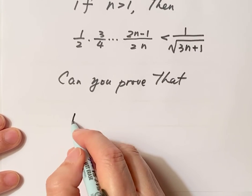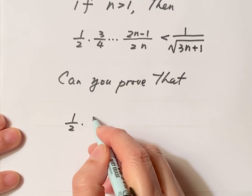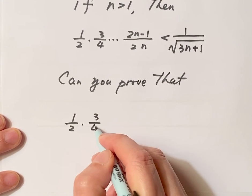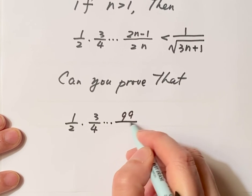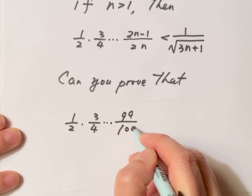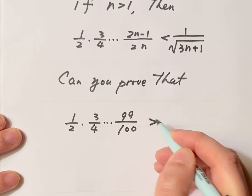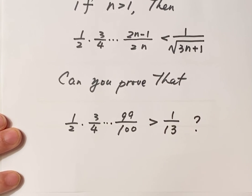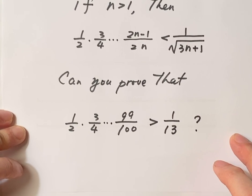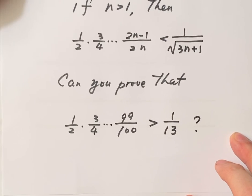As an exercise, can you prove 1 over 2 times 3 over 4 until 99 over 100 is bigger than, not less than, bigger than 1 over 13? That's all, thanks for watching and I'll see you next time.